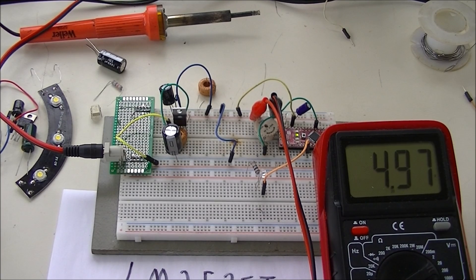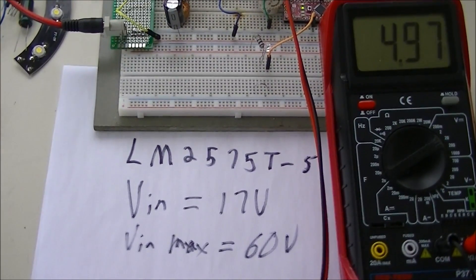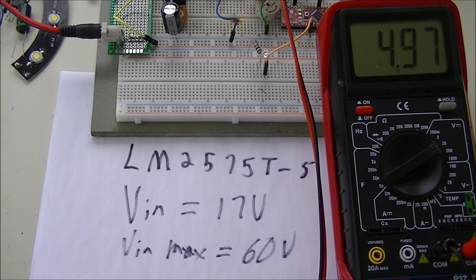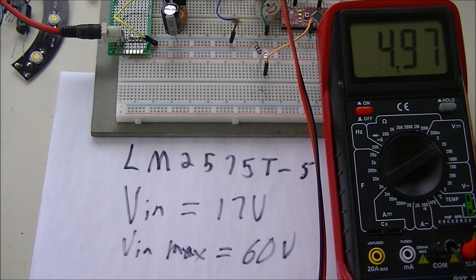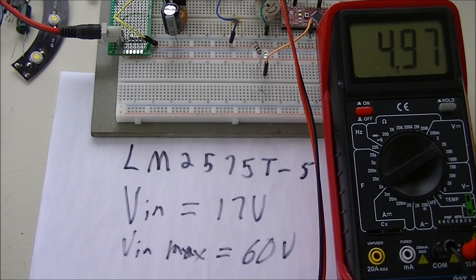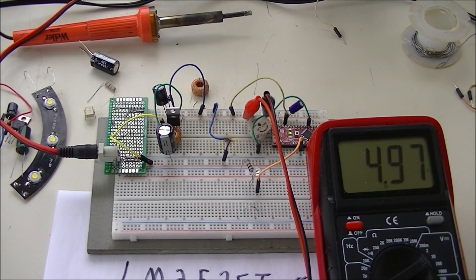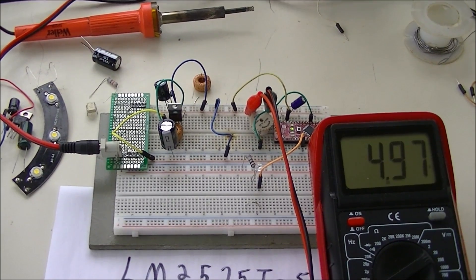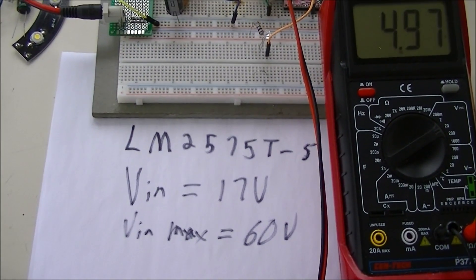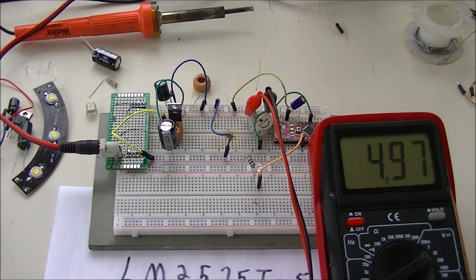All right, here's a demonstration of another switching regulator. Let's move down a little bit. It's an LM2575T-5, a 5-volt output switching regulator. In the case of this circuit, I have an input of 17 volts.